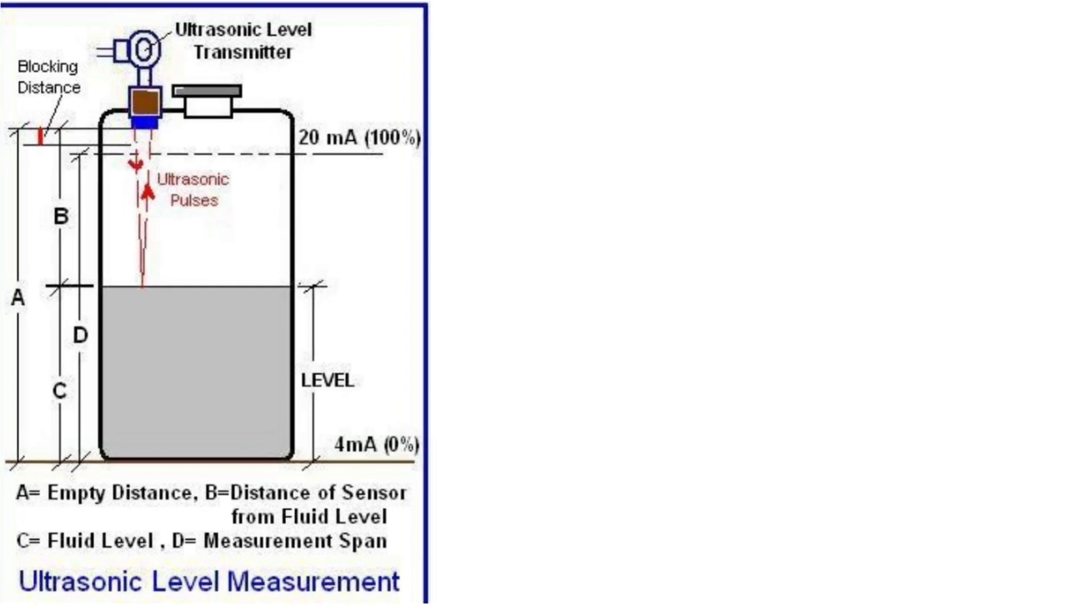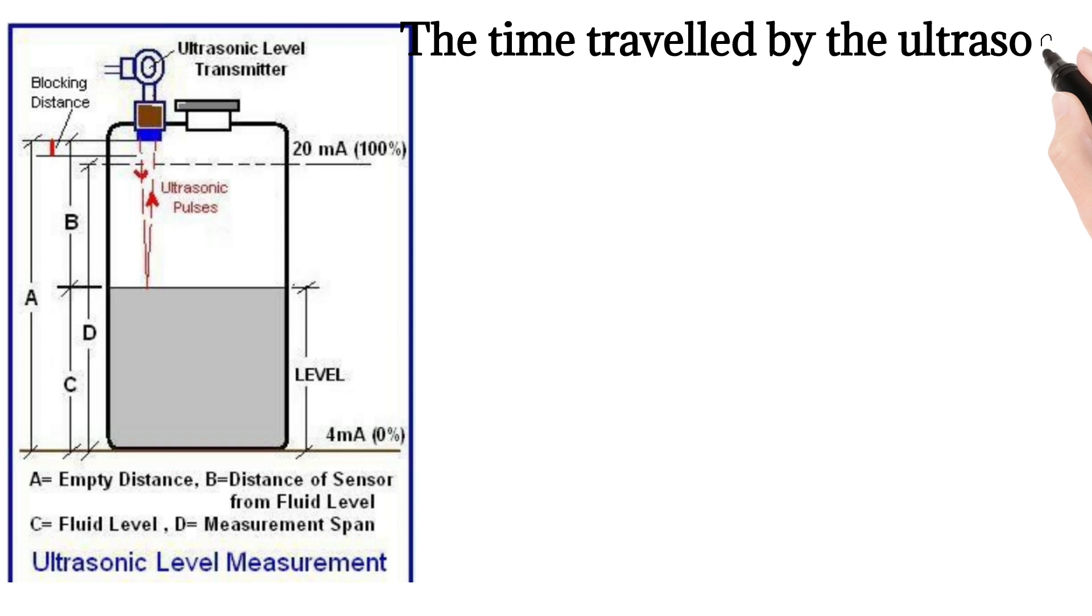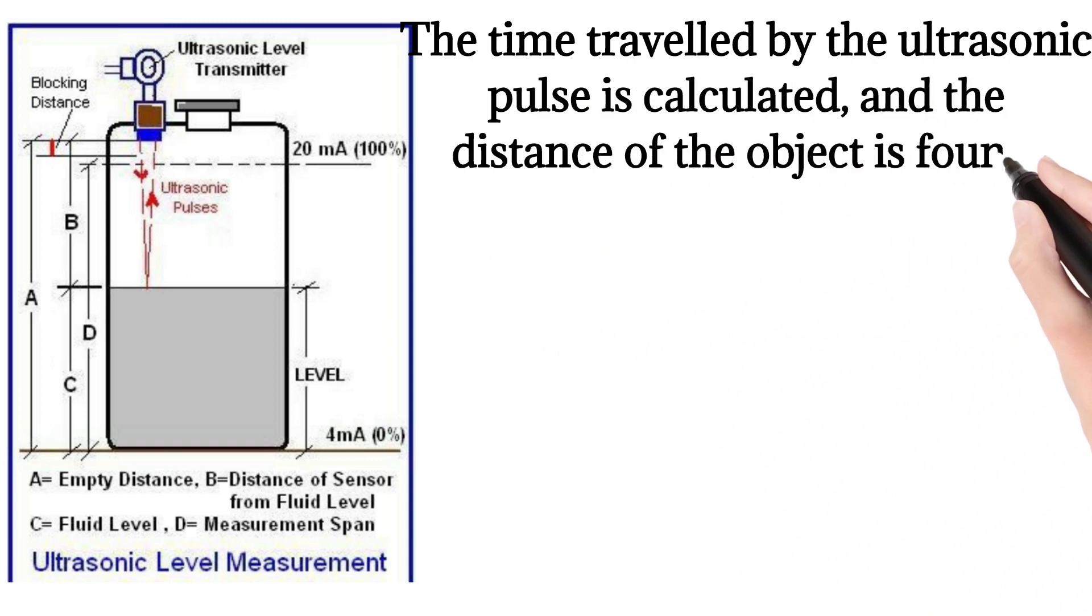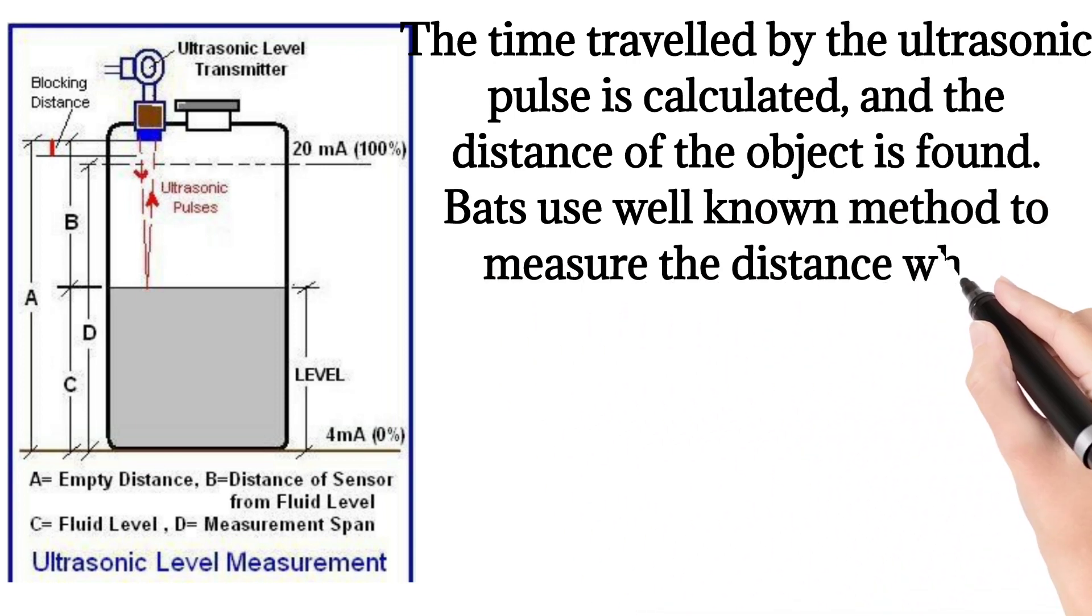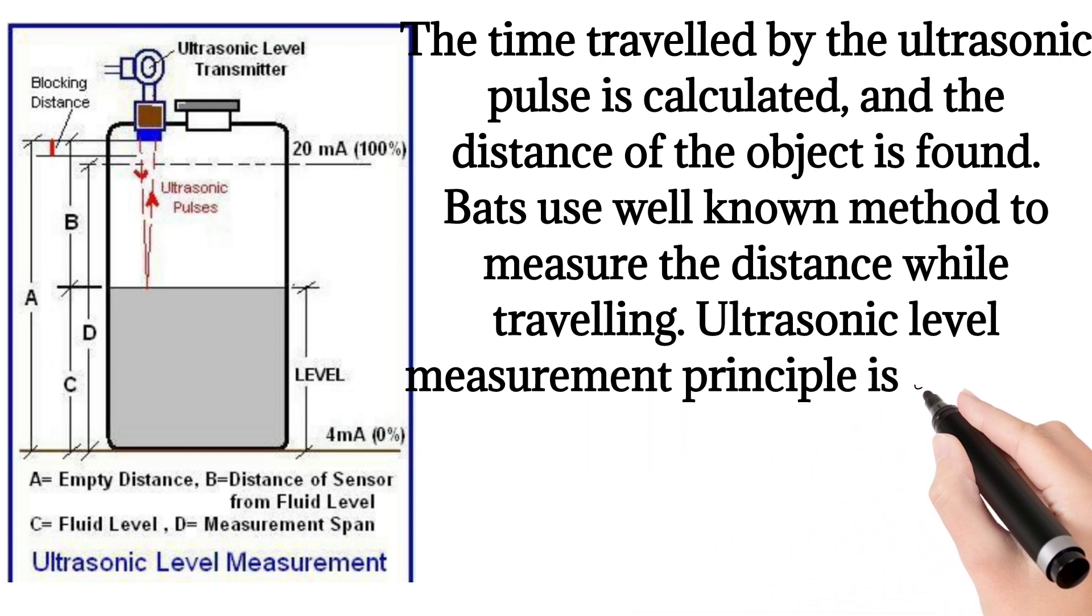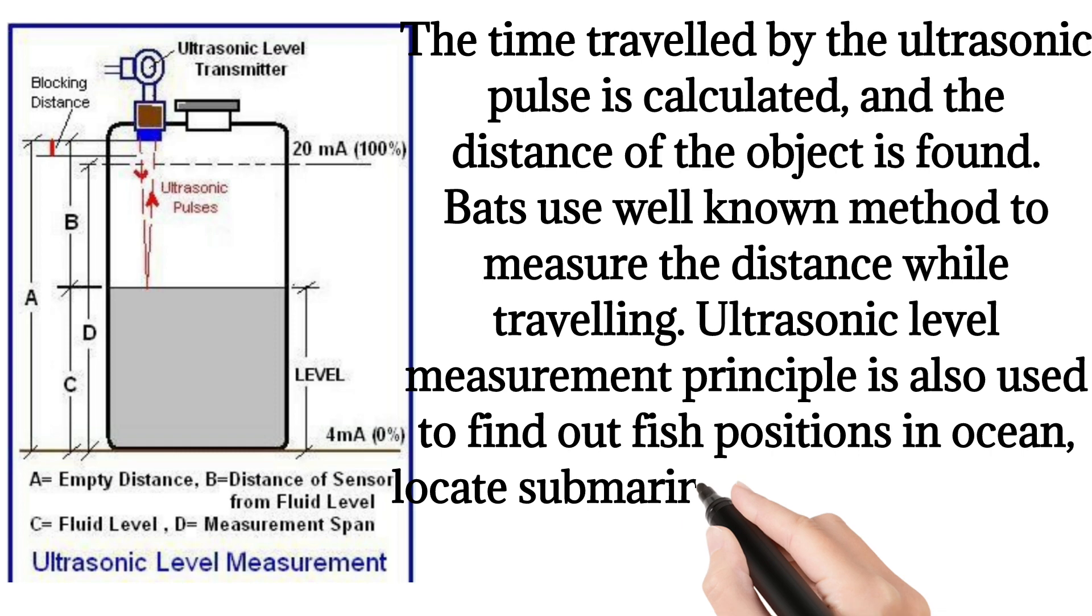The time traveled by the ultrasonic pulse is calculated, and the distance of the object is found. Bats use this well-known method to measure distance while traveling. Ultrasonic level measurement principle is also used to find fish positions in ocean, locate submarines below water level, and determine the position of scuba divers in the sea.